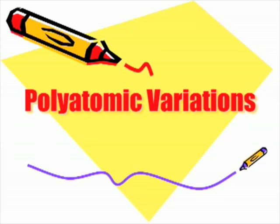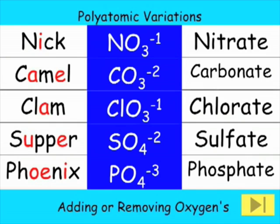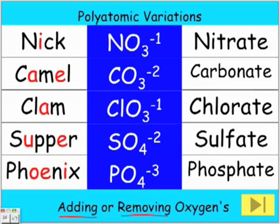Polyatomic Variations. We've looked at polyatomics in terms of Nick the Camel ate a clam for supper in Phoenix. This quirky phrase helps us identify the polyatomic ions. Please refer to the polyatomic ion chapter for additional information. We're going to look at the regular polyatomics and the various variations that occur when we're adding or removing oxygen from the polyatomic compounds.